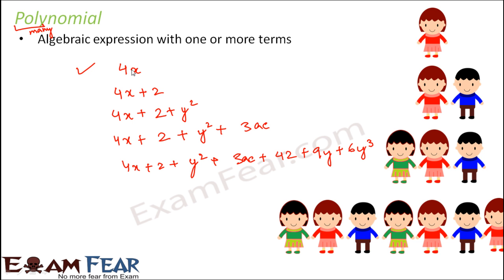So you see, this is an example of monomial, this is an example of binomial, this is an example of trinomial. So basically, monomial, binomial, trinomial, all of these fall under a polynomial.